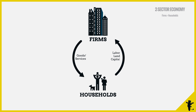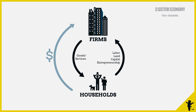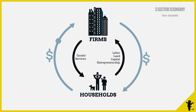Entrepreneurship — for free? You wish. We don't get freebies from firms, and we don't provide labour for free either. So there's money flowing in the opposite direction. Households have to pay firms for the goods they get, and firms also have to pay households in the form of wages, rents, interests, or profits.